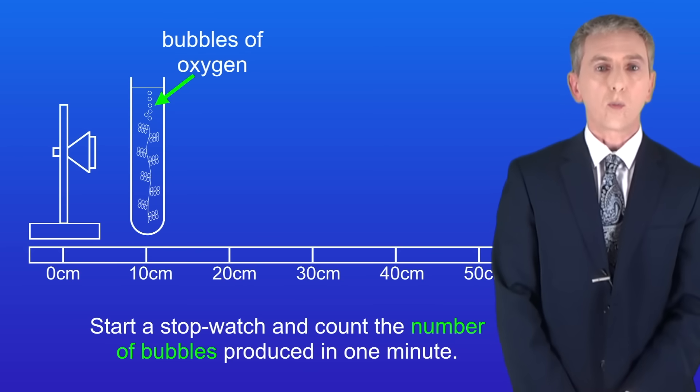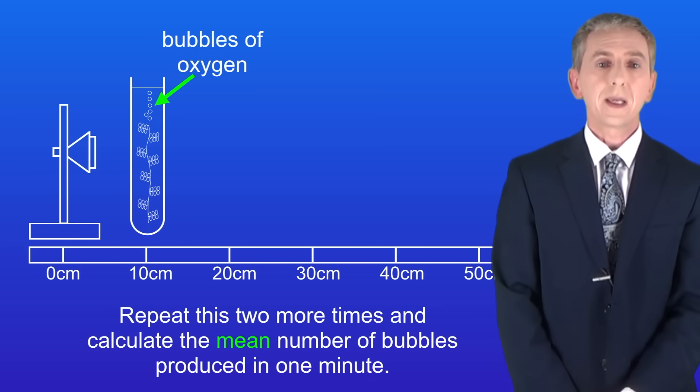We start a stopwatch and count the number of bubbles produced in one minute. We then repeat this two more times and calculate the mean number of bubbles produced in one minute.